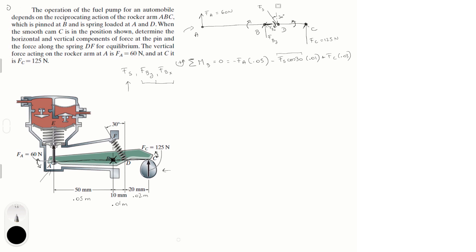And the last one is F_C times 0.03 because it's vertical and it's a distance from B to C, and it's trying to turn this structure counterclockwise so it's positive. Okay, so we got F_A and we got F_C right here and right here, so we're just going to plug them in.